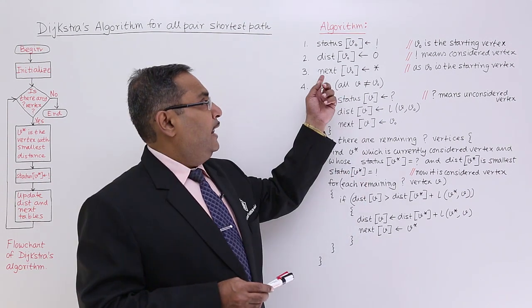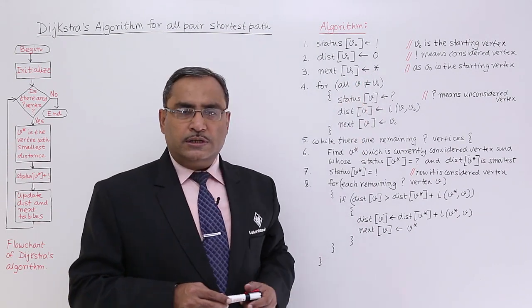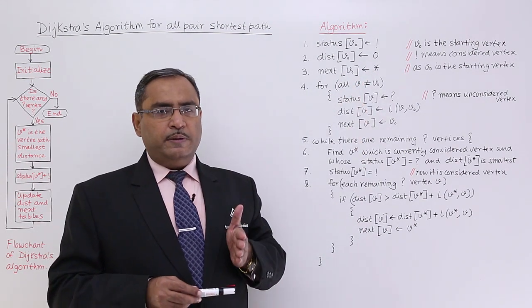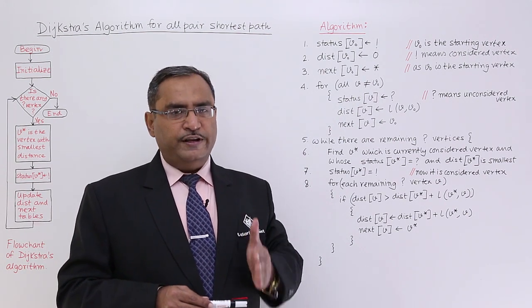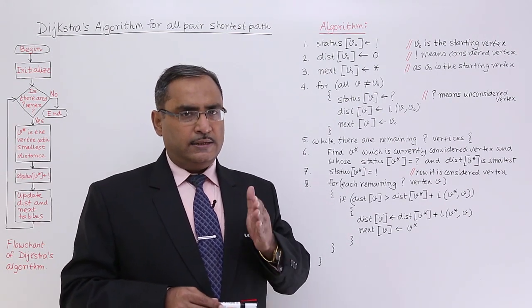And then next V0 is equal to star indicating that it has been measured not from any other nodes. So as it is the starting vertex, next of V0 will be asterisk symbol.